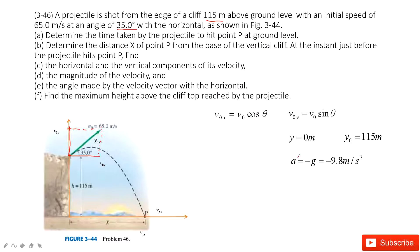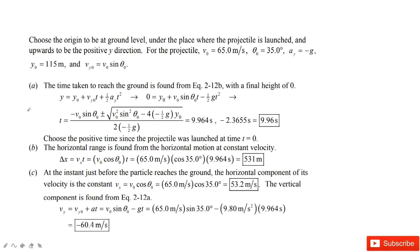Can you find time t? Yes! We can use the kinematic equation for position. We input all the known quantities and solve the equation to find time t. We get two solutions for time t. Because one is negative, we drop it and take the positive time. So the time is approximately 10 seconds.